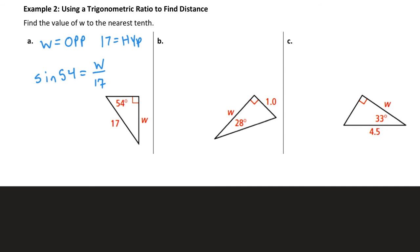In part B, with 28 as our reference angle, 1.0 is the opposite leg and W is the adjacent leg. So looking at the ratios, this would be the tangent of 28 equals the opposite leg, 1, over the adjacent leg, W. I'll say leg instead of side to differentiate, because the hypotenuse is a side too — so opposite leg and adjacent leg.